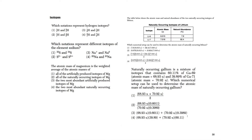Now for isotope questions. Which notations represent hydrogen isotopes? In isotopes, the bottom number must be the same — only choice one has the same bottom number with different top numbers. Which notations represent different isotopes of sodium? Sodium is Na — the bottom number stays the same, and the top number is allowed to change.